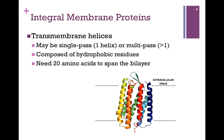First, we have those that form transmembrane helices — an alpha helix. It may be a single pass, that is, a single helix, or a multi-pass, where we have more than one helix, as illustrated in our figure here. These residues are alpha helical, and remember that means those peptide bonds, which are very polar, are neutralized by forming hydrogen bonds. The residues that compose the membrane-spanning region are all hydrophobic.